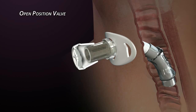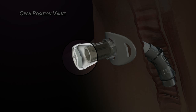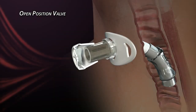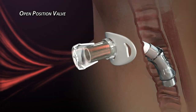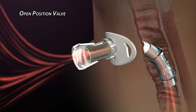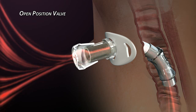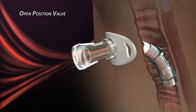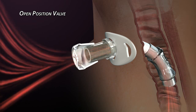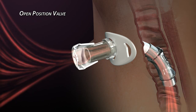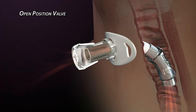An open position valve uses a membrane or diaphragm to perform the valve opening and closing functions. The membrane flexes during inhalation, which allows air to pass around it and through the tracheostomy tube. When the inhalation cycle reaches its peak, the membrane temporarily relaxes and returns to its normal position.